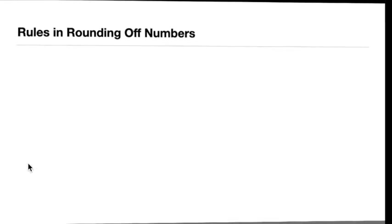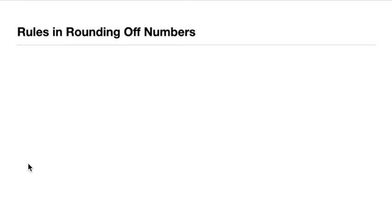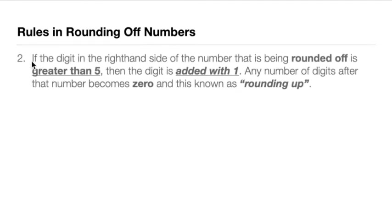Rule number 2: if the digit on the right-hand side of the number being rounded off is greater than 5 — that is, 6, 7, 8, or 9 — then that digit is added with 1. Any digits after that number become 0. This is what we call rounding up, the opposite of rounding down.